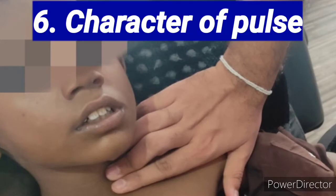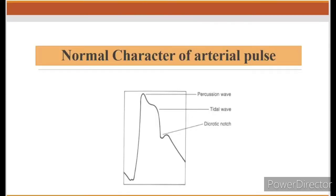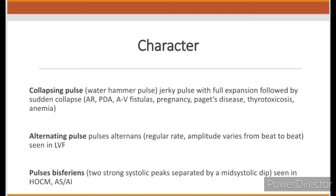The sixth point is character of the pulse. The upstroke wave is labeled as the percussion wave and the downstroke wave is labeled as the tidal wave, in which there will be a dicrotic notch. Abnormal characters include collapsing pulse or water hammer pulse, in which there is large volume pulse with abrupt and rapid upstroke followed by rapid downstroke, seen in aortic regurgitation and PDA.